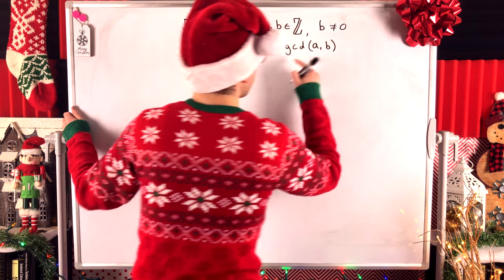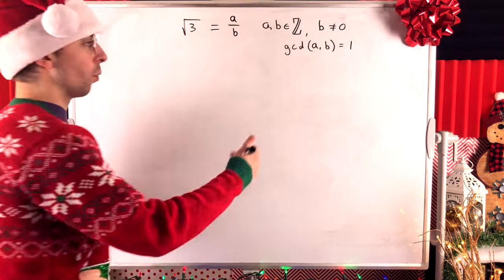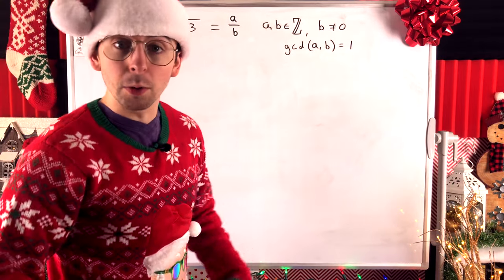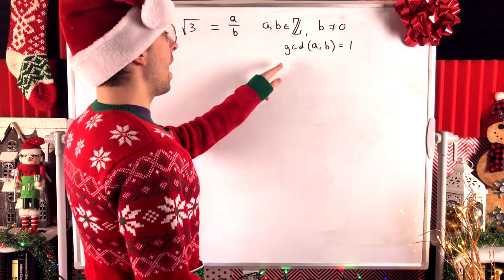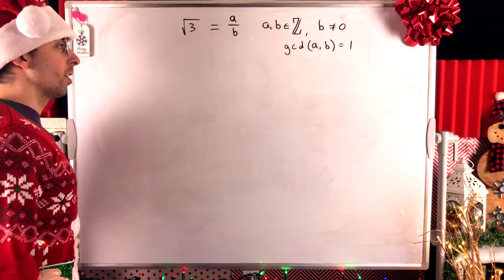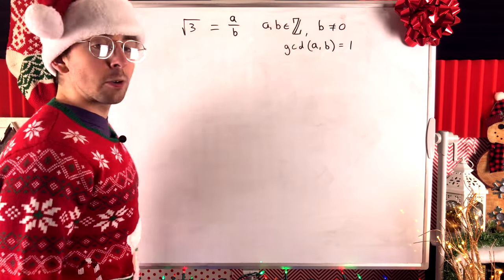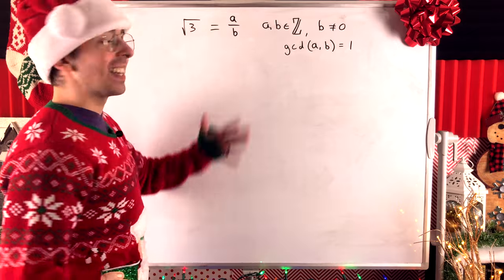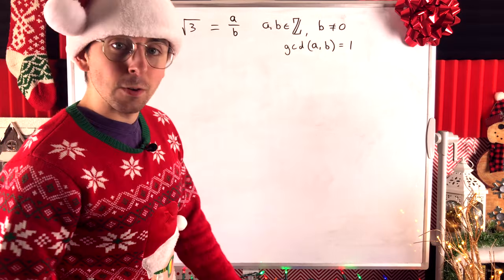Meaning that A and B have no factors in common except for 1. So, the greatest common divisor, the GCD of A and B is equal to 1. That's what it means when you fully reduce a fraction. You're getting the numerator and denominator to have a greatest common divisor equal to 1. So, we can assume that's also the case. We're going to assume, for the sake of contradiction, that we can write the square root of 3 in this way, that it is a rational number, and we'll show that this forces a contradiction.